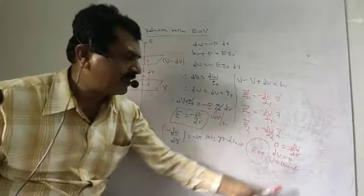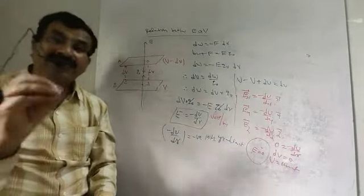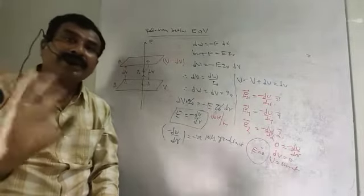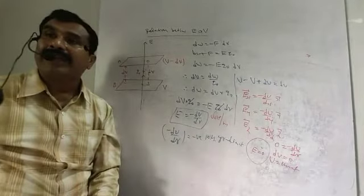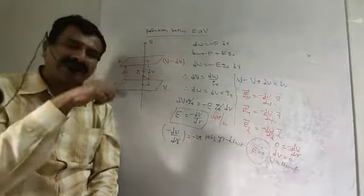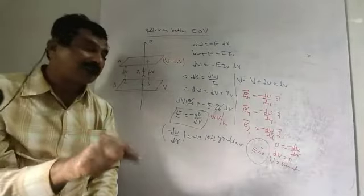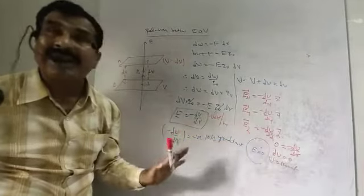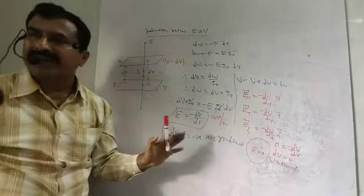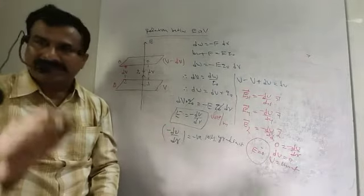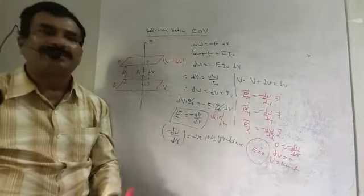If dV equals 0, then V is equal to a constant. This means that inside the conductor the electric potential is constant. The electric potential is not zero — it remains constant and equal to the potential at the surface of the conductor at all points inside. So inside the conductor, the electric field is zero but the electric potential is constant and equal to the surface value.